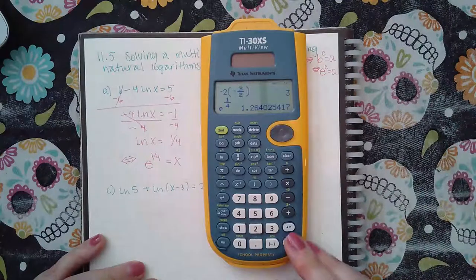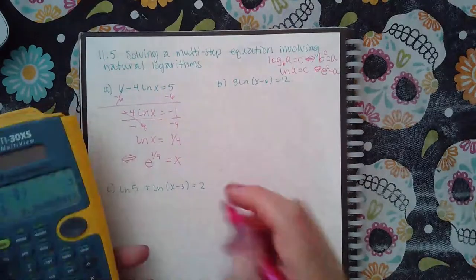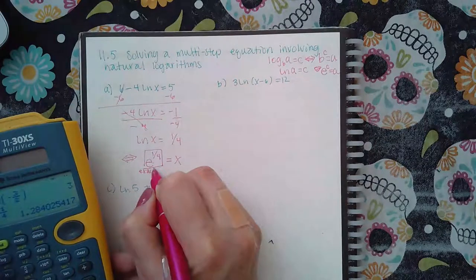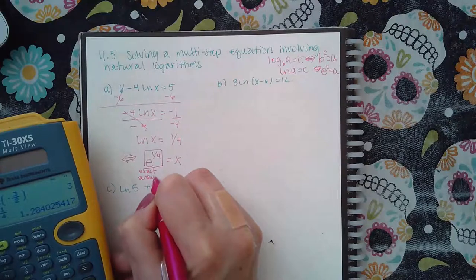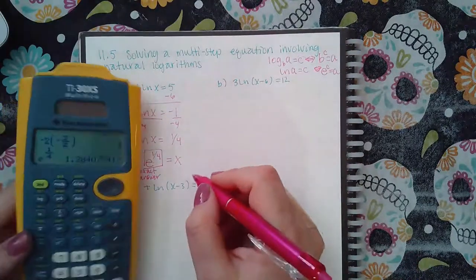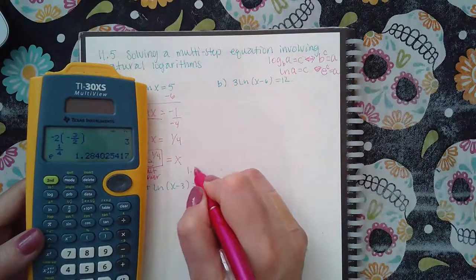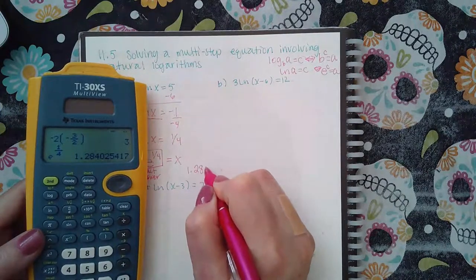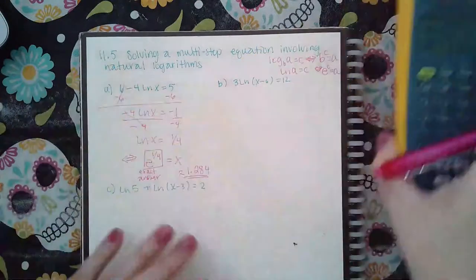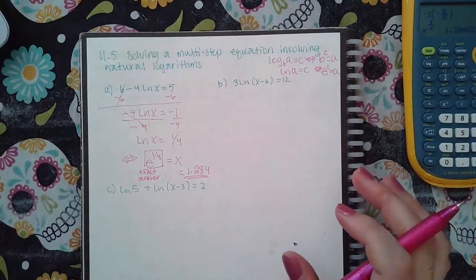So we get, depending on the problem, it could want the exact answer. If it wants the exact answer then you leave it in that form, but if it asks you to round to a certain decimal place, then it wants the decimal value and so that would be 1.2284. Pay special attention to whether they say round to such and such place. If they do not say the words round to, then you need to be giving them the exact answer.